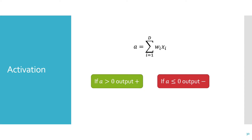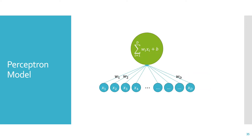If a is greater than 0, we output positive, and if a is less than or equal to 0, we output negative. Sometimes it's nice to not have to rely on 0 as our threshold, so we add a threshold t instead, and predict positive if a is greater than t, and negative if a is less than or equal to t. Mathematically, it's nice to have our activation function set relative to 0, so we can achieve the same threshold effect by adding a bias term b. Now we're still only interested in 0 as our threshold, but we have a new additive term b. Here is our perceptron with the new bias term b—this is our model.